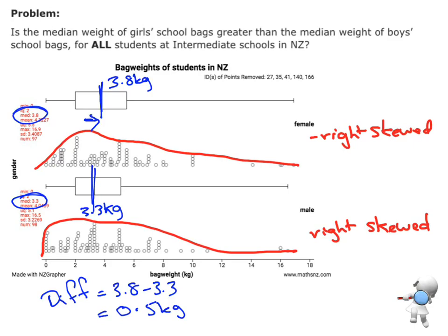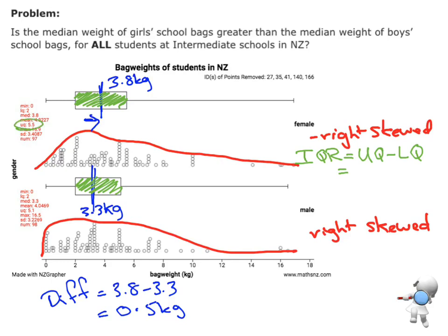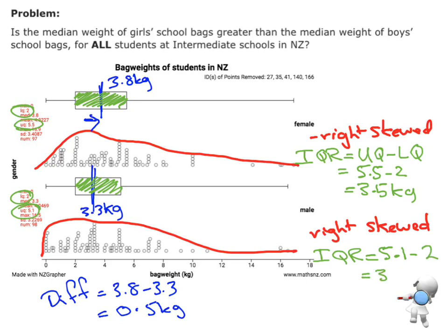The third thing I want to do is compare the spread — looking at how wide the box is for the girls and how wide the box is for the boys. It looks like the girls might be a little more spread out. For evidence, I'm going to find the interquartile range. For the girls, upper quartile minus lower quartile: the upper quartile is 5.5 and the lower quartile is 2, so the IQR is 5.5 take away 2, equals 3.5 kg. For the boys, upper quartile is 5.1 and lower quartile is 2, so the IQR is 5.1 take away 2, which gives 3.1 kg.